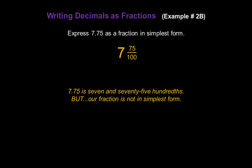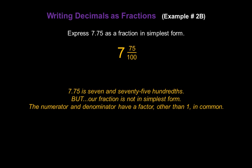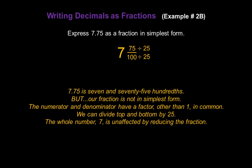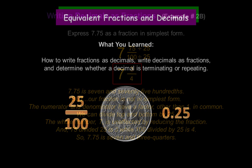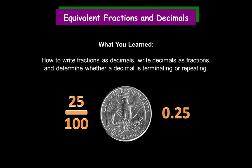But our fraction is not in simplest form — the numerator and denominator have a factor other than one in common. We can divide top and bottom by 25. The whole number 7 is unaffected by reducing the fraction, so we bring the 7 down into our answer. 75 divided by 25 is 3 for our numerator, and 100 divided by 25 is 4 for our denominator. So 7.75 is 7 and 3 quarters. Congratulations! You've learned how to write fractions as decimals, write decimals as fractions, and determine whether a decimal is terminating or repeating.